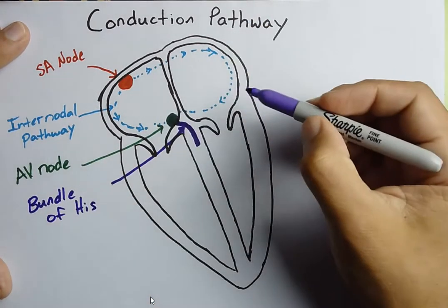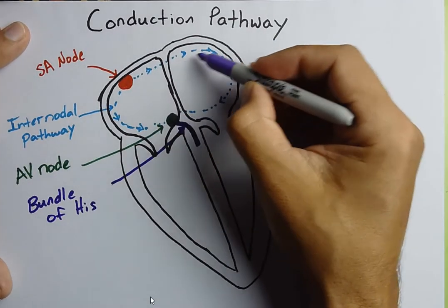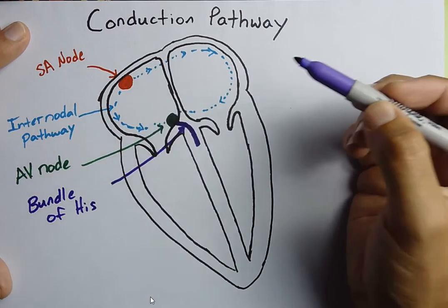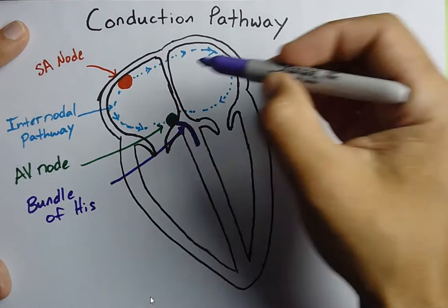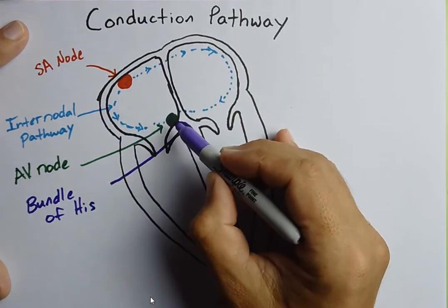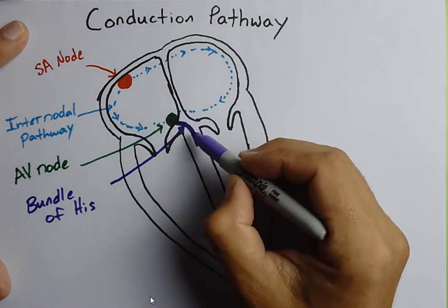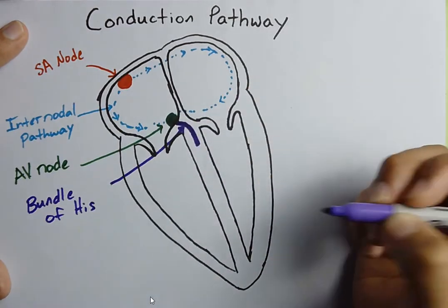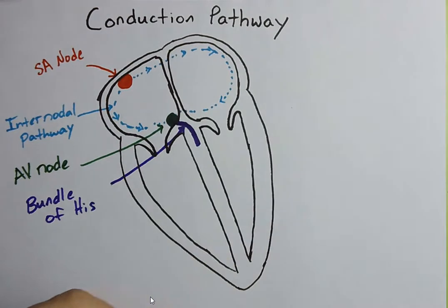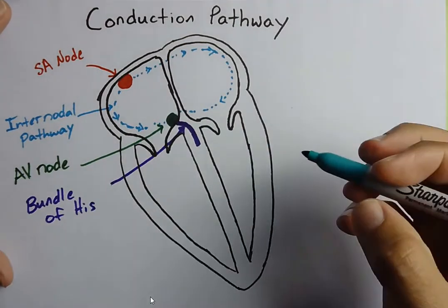This bundle is different from the internodal pathways because if a small portion of the internodal pathway gets blocked or damaged by an infarct, that current can still travel down to the AV node through a different part of the pathway. But if this bundle of Hiss gets damaged, there is no other way for current to move down into the interventricular septum. It's called a complete bundle block and it's very dangerous on a patient and can cause heart failure and basically the heart to stop in the long run.